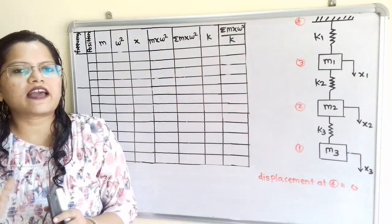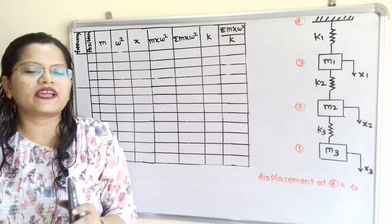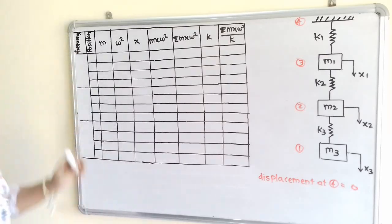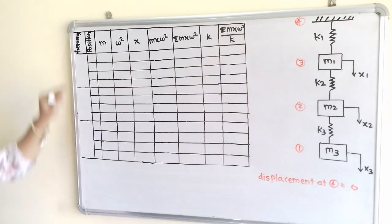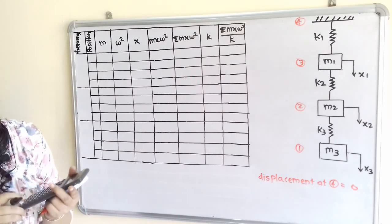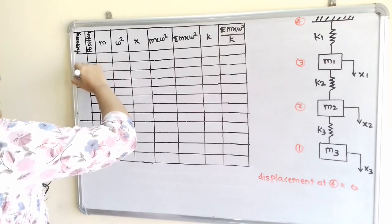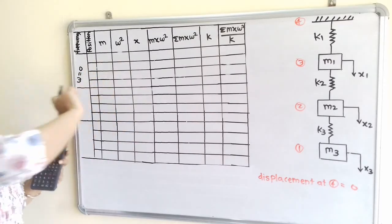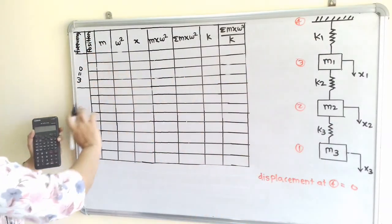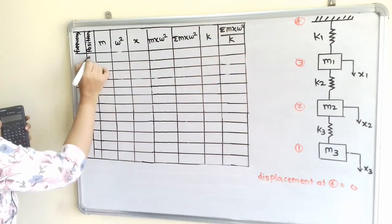The Holzer method is a trial and error method. By assuming the value of omega, we have to find out the natural frequency. We will prepare a table. The first column is for frequency, and the second column is for position. When we assume omega equal to 0, we write positions 1, 2, 3, and 4.